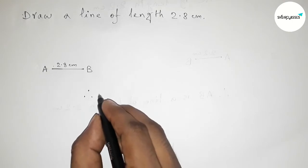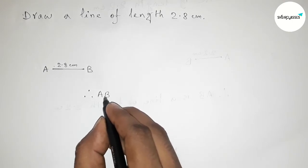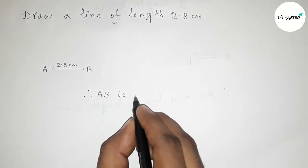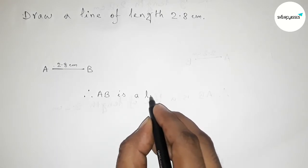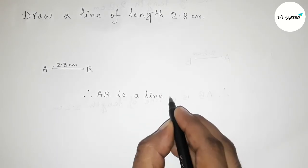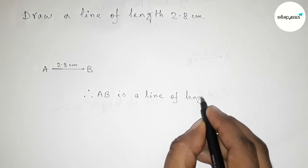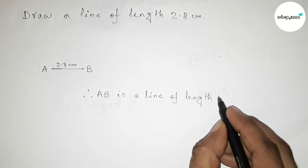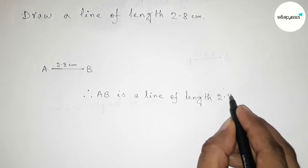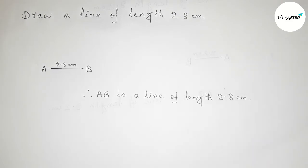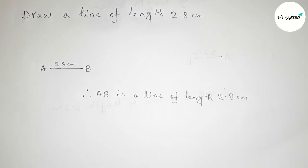So AB is a line of length 2.8 centimeters and by this way you can draw a line of length 2.8 centimeters in an easy way by using a scale. So that's all, thanks for watching. If this video is helpful to you, then please share it with your friend. Thanks for watching.